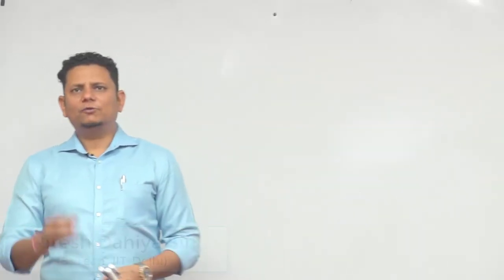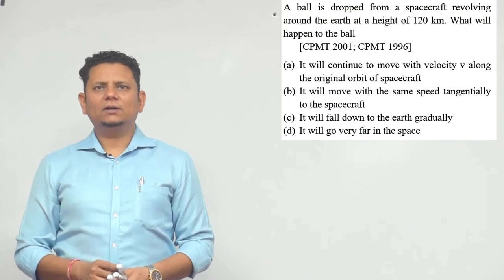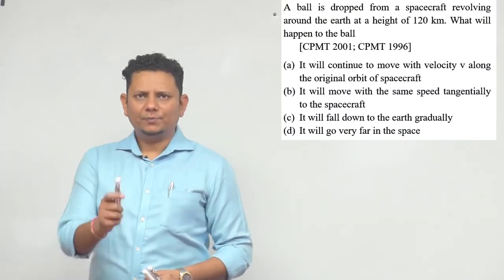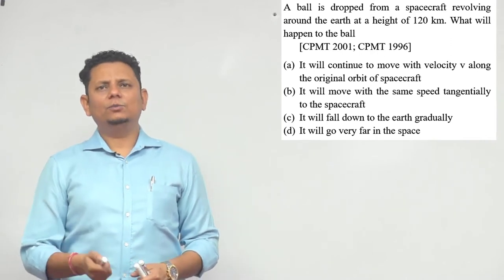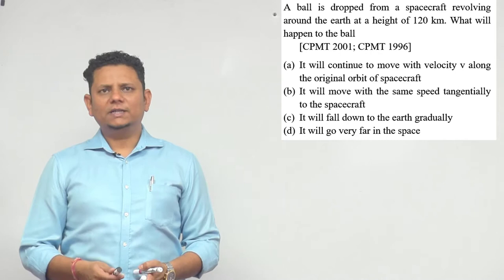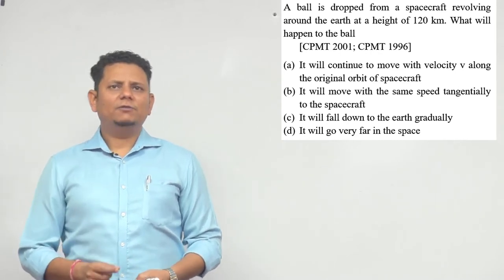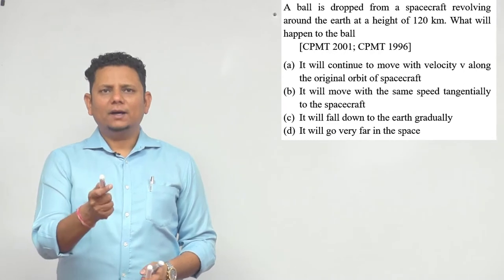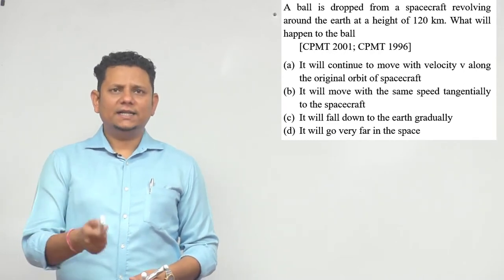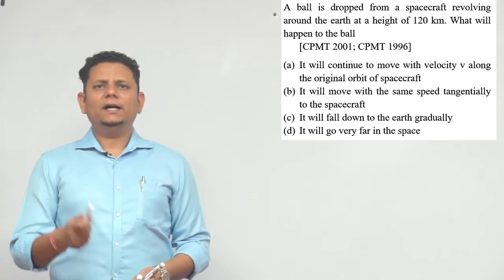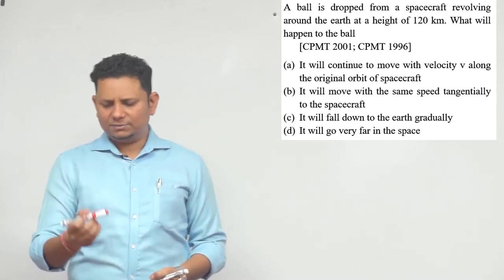A 2001 question says a ball is dropped from a spacecraft revolving around the earth at a height of 120 kilometers. What will happen to the ball? Option A: it will continue to move with velocity v along the original orbit of spacecraft. Option B: it will move with the same speed tangentially to the spacecraft. Option C: it will fall down to the earth gradually. Option D: it will go very far in the space.